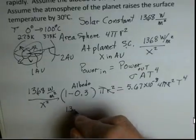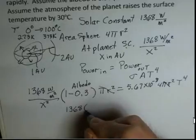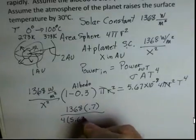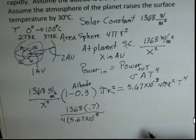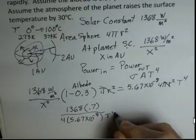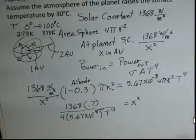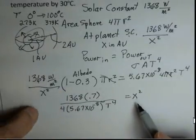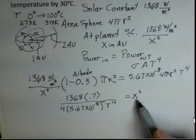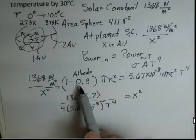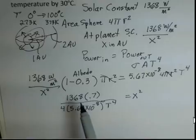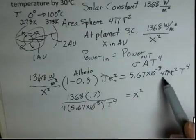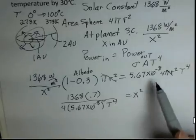So 1368, I'm going to drop the units, times 0.7 here, divided by 4 times Stefan's constant times T to the fourth equals X squared. Our solar constant at the Earth divided by X squared gets us the solar constant at the planet, but we want to solve for X squared. I've gone ahead and assumed that both of these planets are going to have an albedo of 0.3. The pi r squared is canceled on both sides.